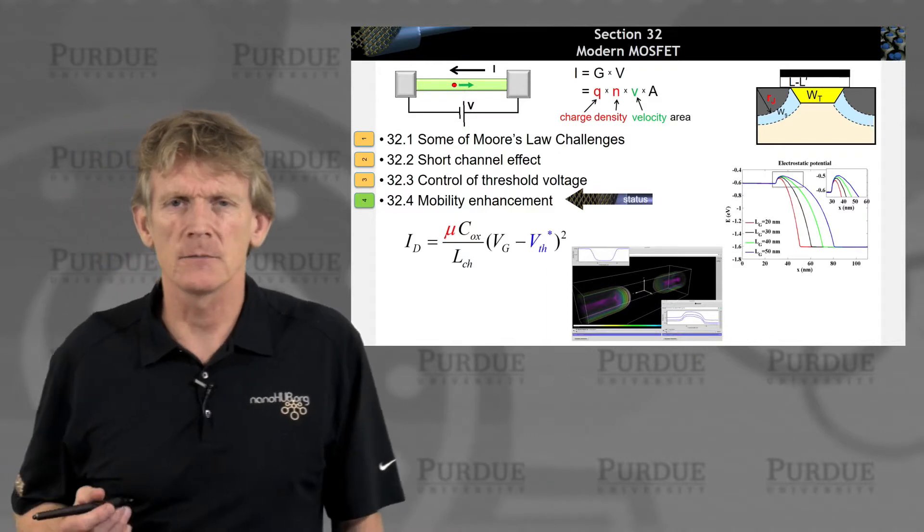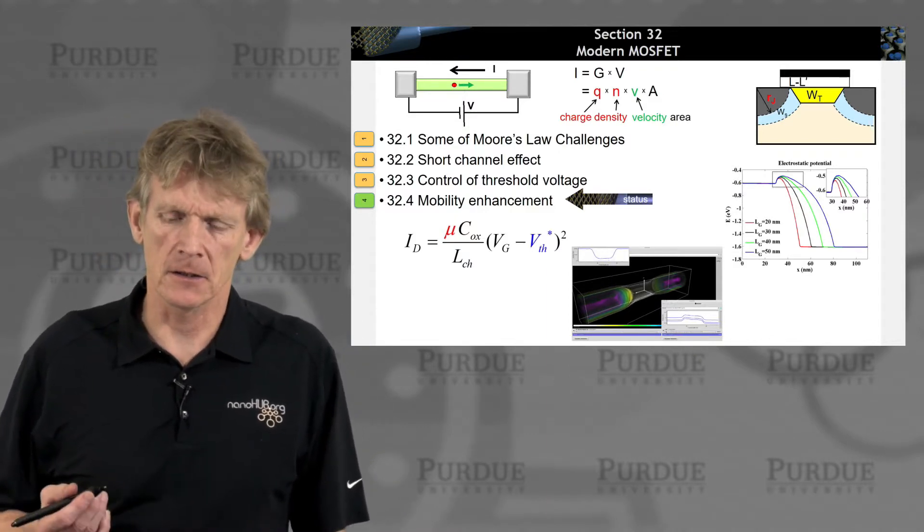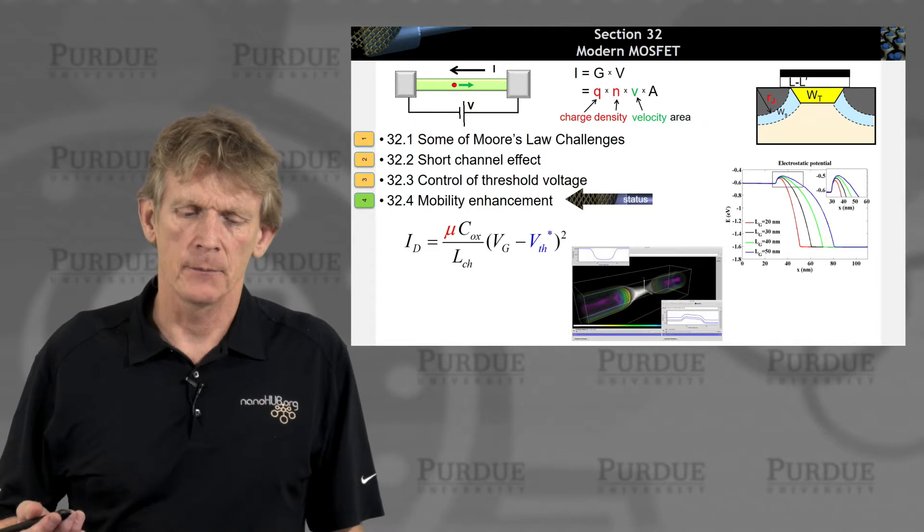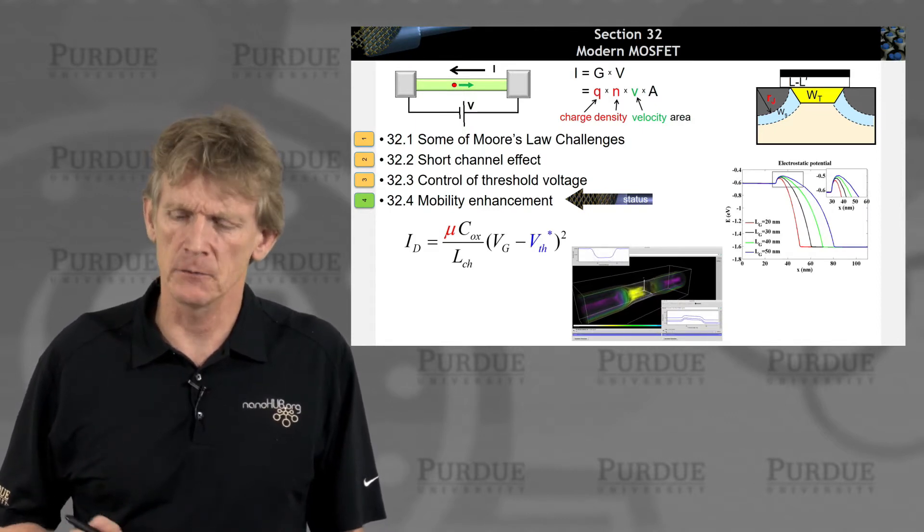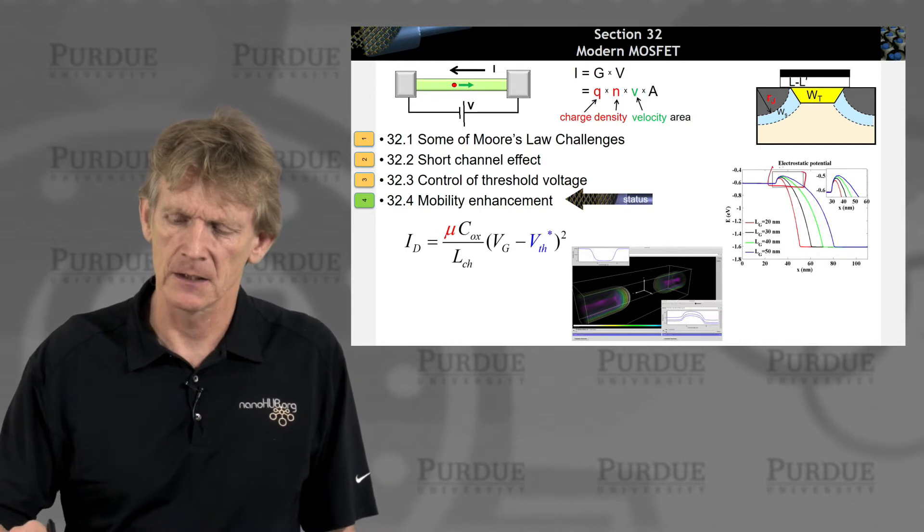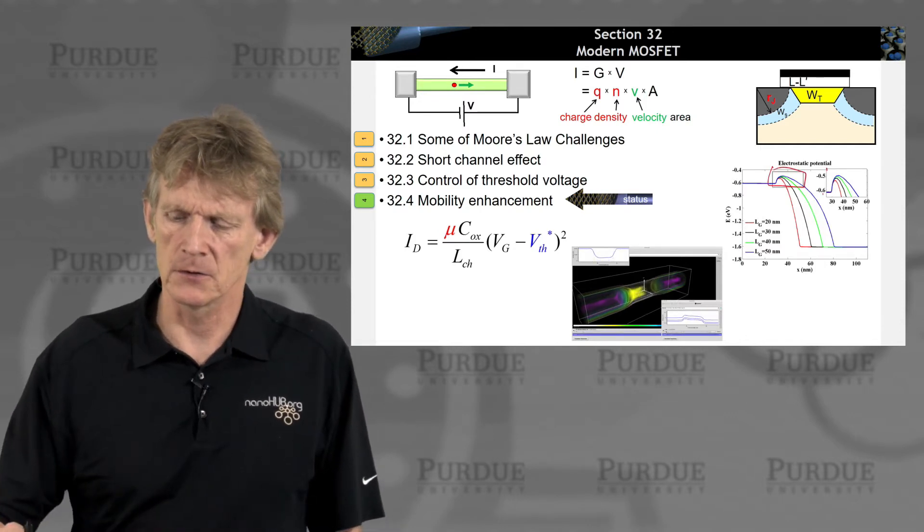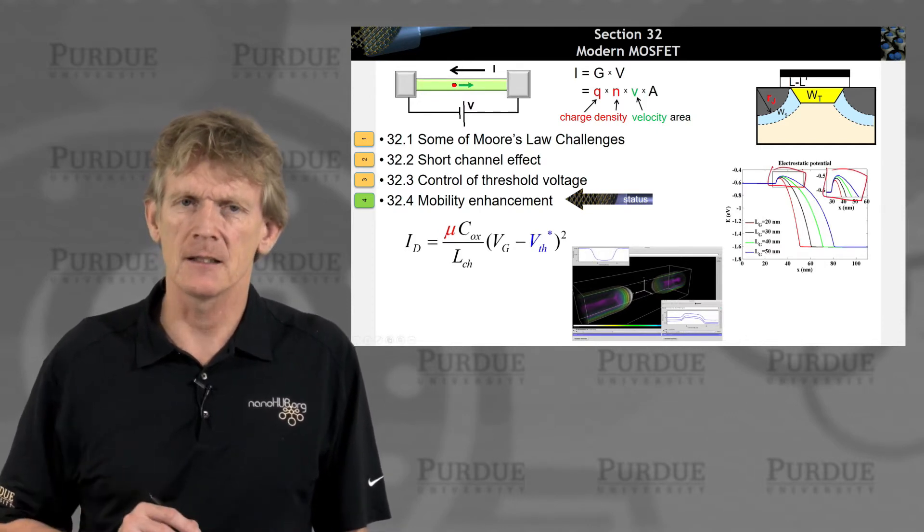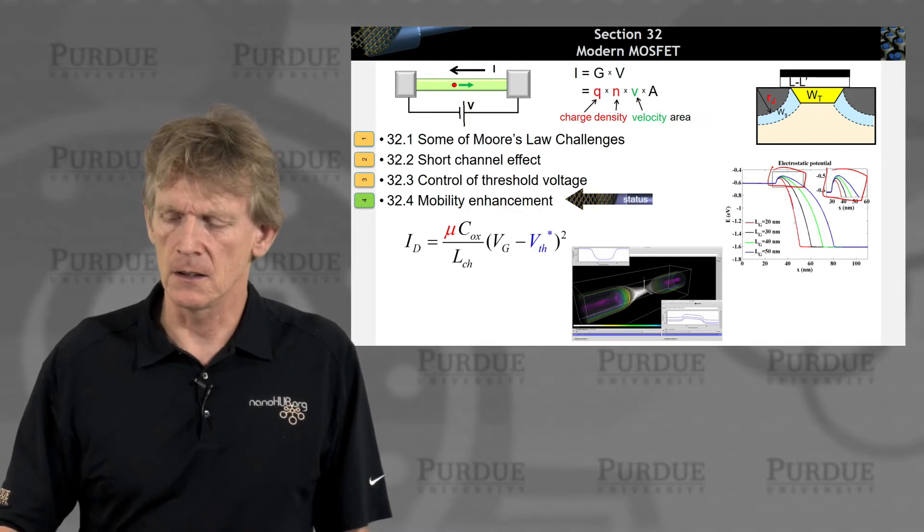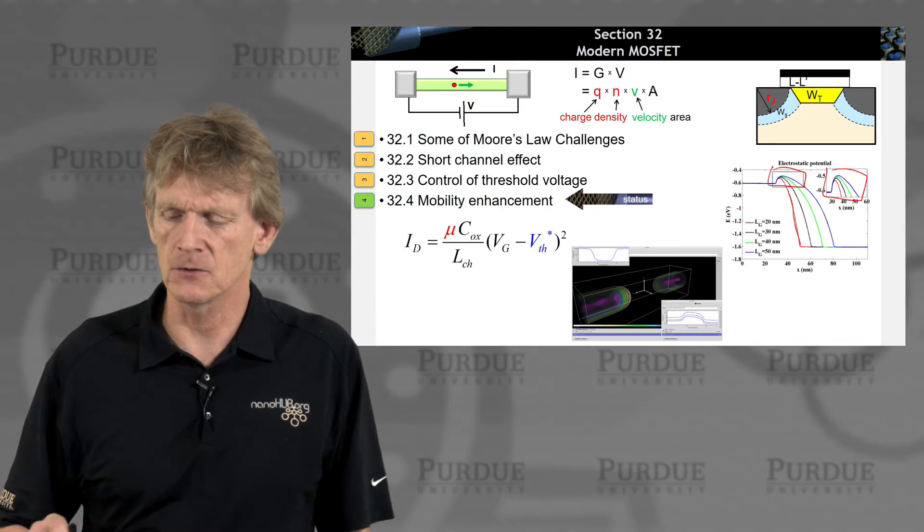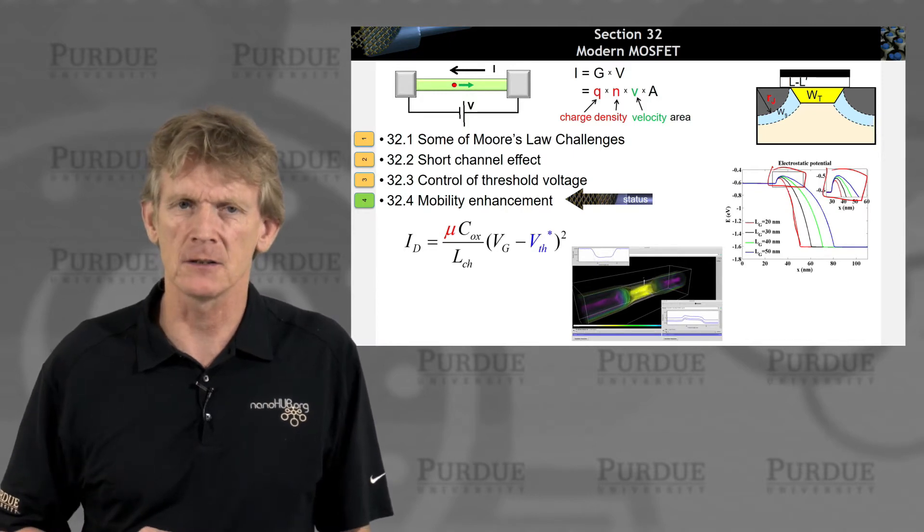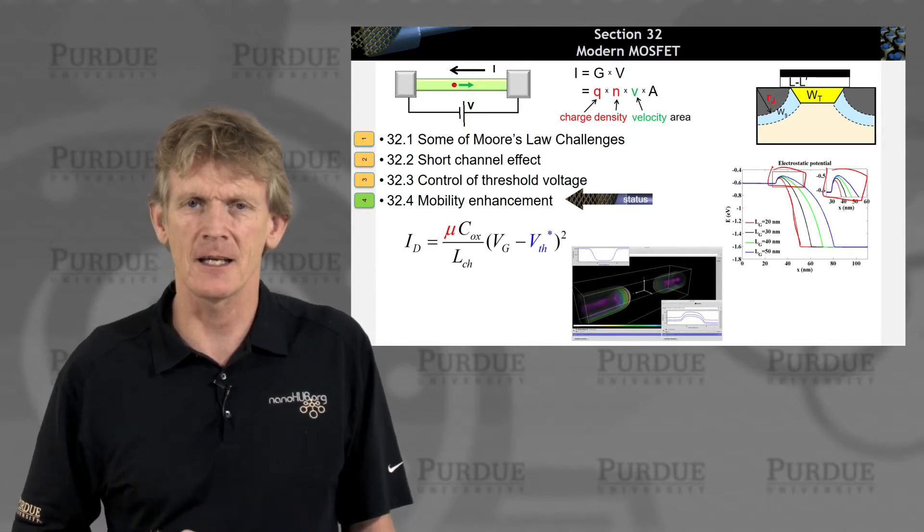Alright, so let's talk about mobility enhancements. That's in the context of previously having discussed the threshold voltage, how to control it. We talked about short channel effects where it's important to mitigate effects due to the large applied drain voltage that is now starting to impinge on the gate potential or the electrostatic potential under the gate.